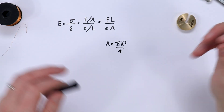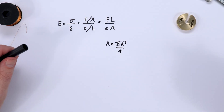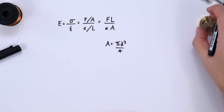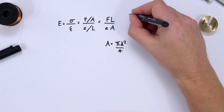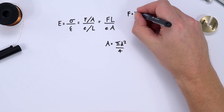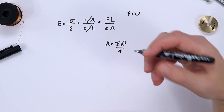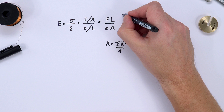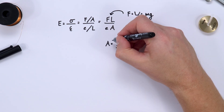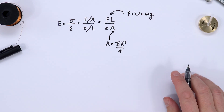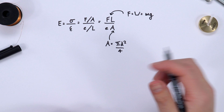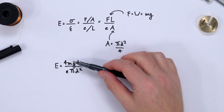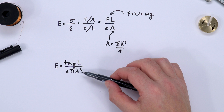That's the same as πr², but since we're measuring diameter we use A = πd²/4. The force applied to the wire equals the weight loading it, which is mass times gravitational field strength. Substituting in, the Young Modulus is equal to 4mgL over E·πd².